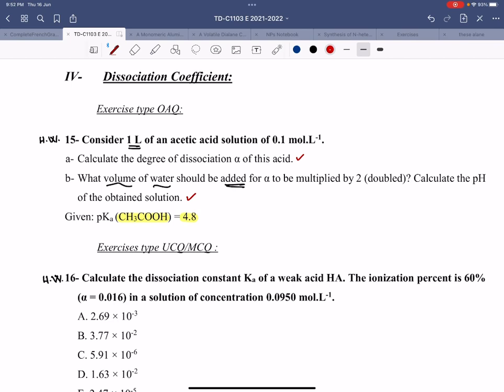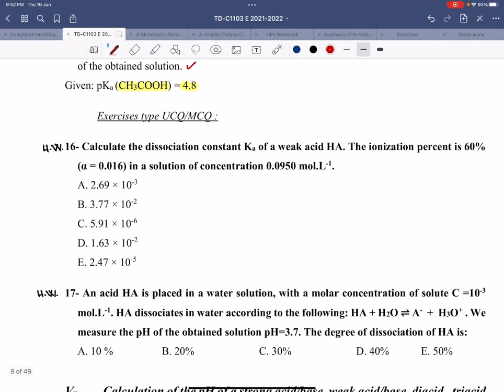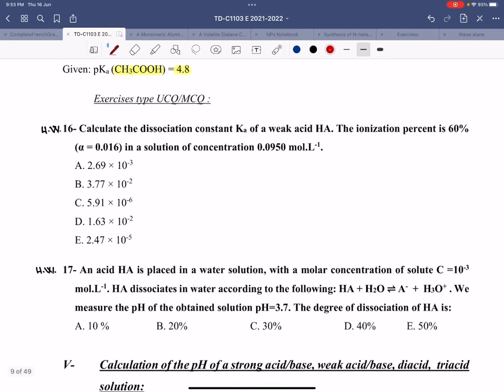Number 16: Calculate the dissociation constant of the weak acid HA if the ionization percent is 60%. The ionization percent is basically the percentage of alpha. It cannot be 60% as alpha is 0.016. I don't know why they didn't correct this this year. This is basically 1.6% in the solution of concentration 0.0950.